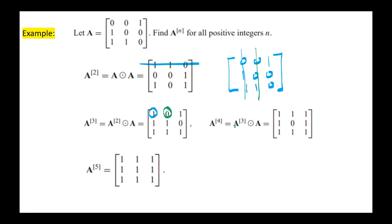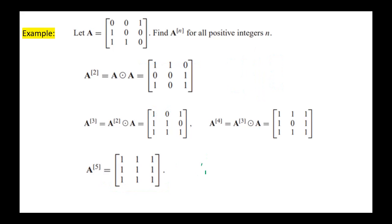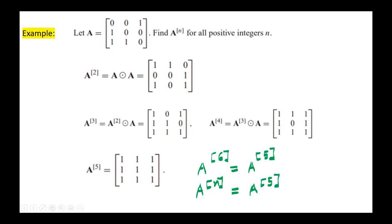A to the power 4 equals A³ Boolean-product A. A5 equals A to the power 4 multiplied by A. Note that we get all ones in A5. If we continue, A6 is also a matrix with all ones, same as A5. A7 is also the same matrix. This implies that A to the power n equals A to the power 5 for all n greater than or equal to 5. For today, that's all. Thank you.